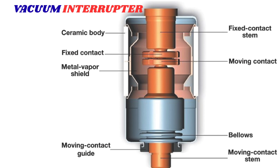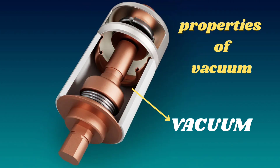Before we continue, let us analyze the unique properties of vacuum that are useful in vacuum circuit breakers. Vacuum is an empty space where the pressure is significantly lower than atmospheric pressure, and it contains very few or no particles, including molecules or atoms. In a perfect vacuum, there would be no oxygen, nitrogen, or any other gases present. In the context of VCBs, the vacuum interrupter is evacuated to create a space with extremely low pressure, which allows for efficient arc quenching and current interruption.